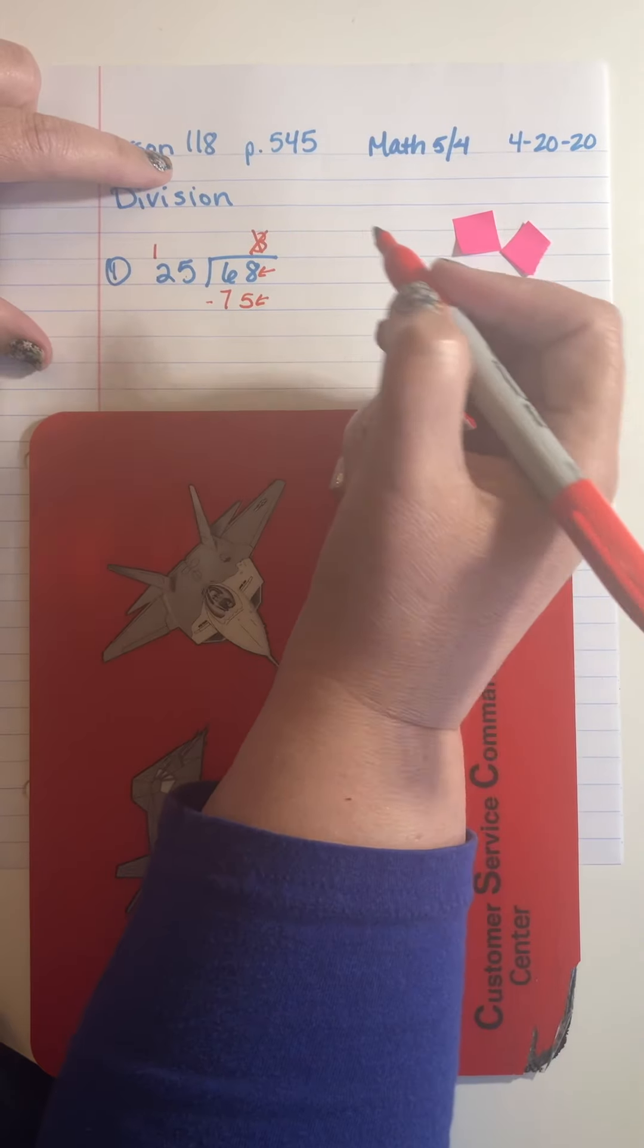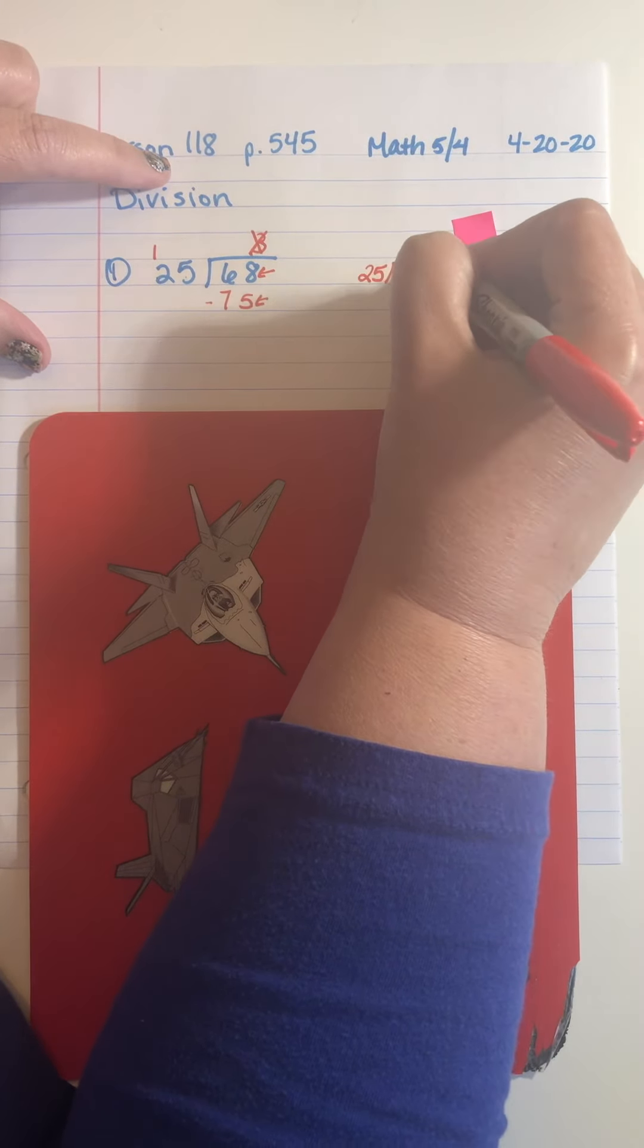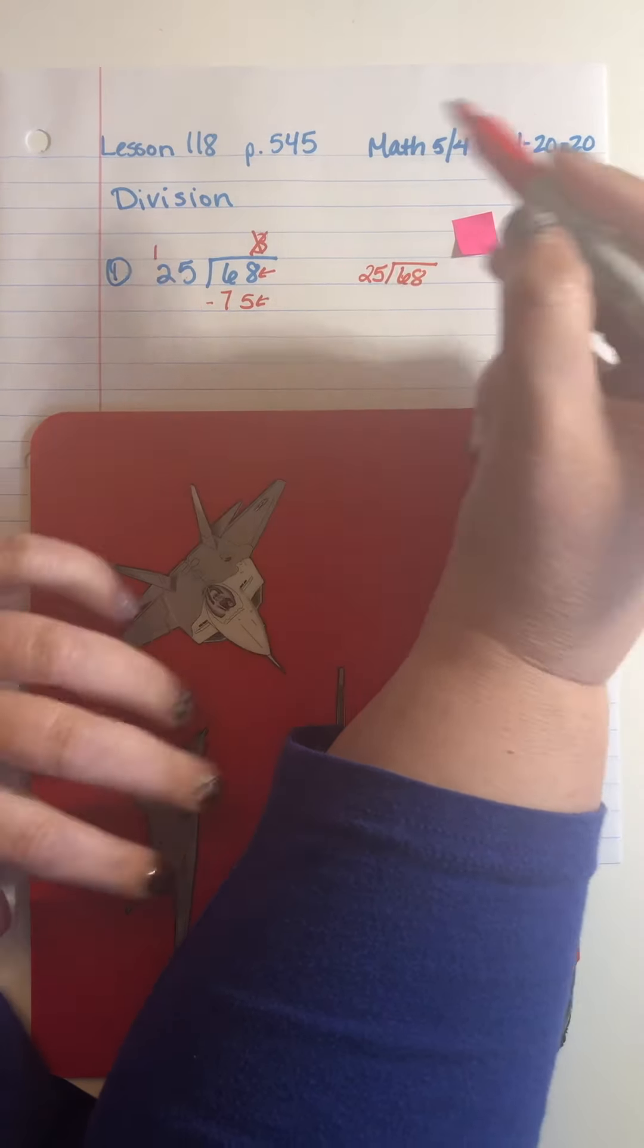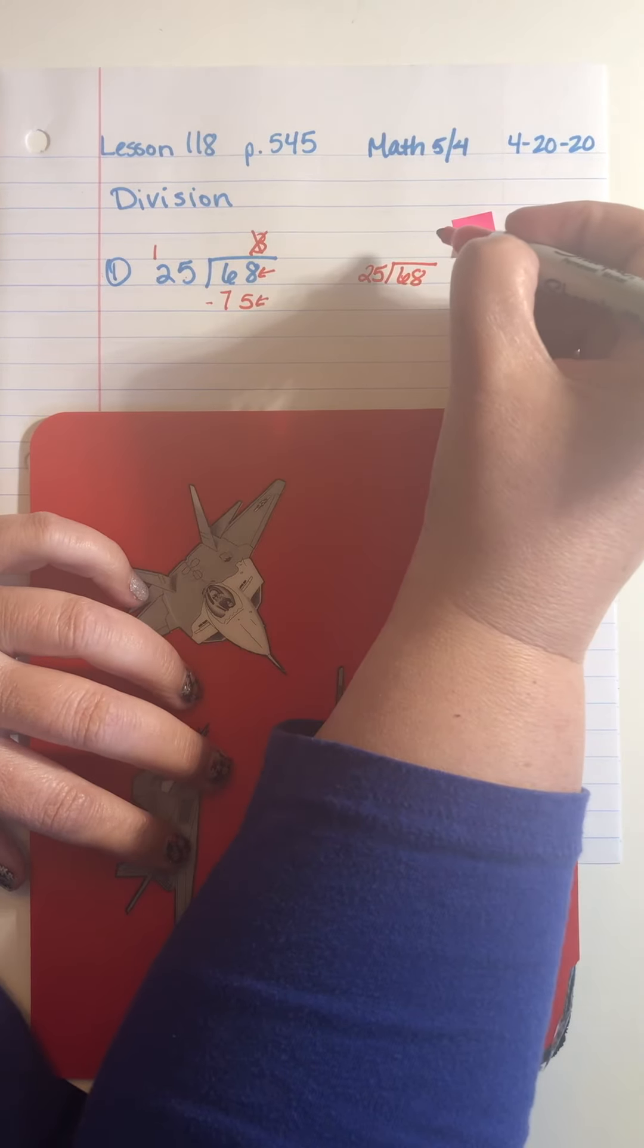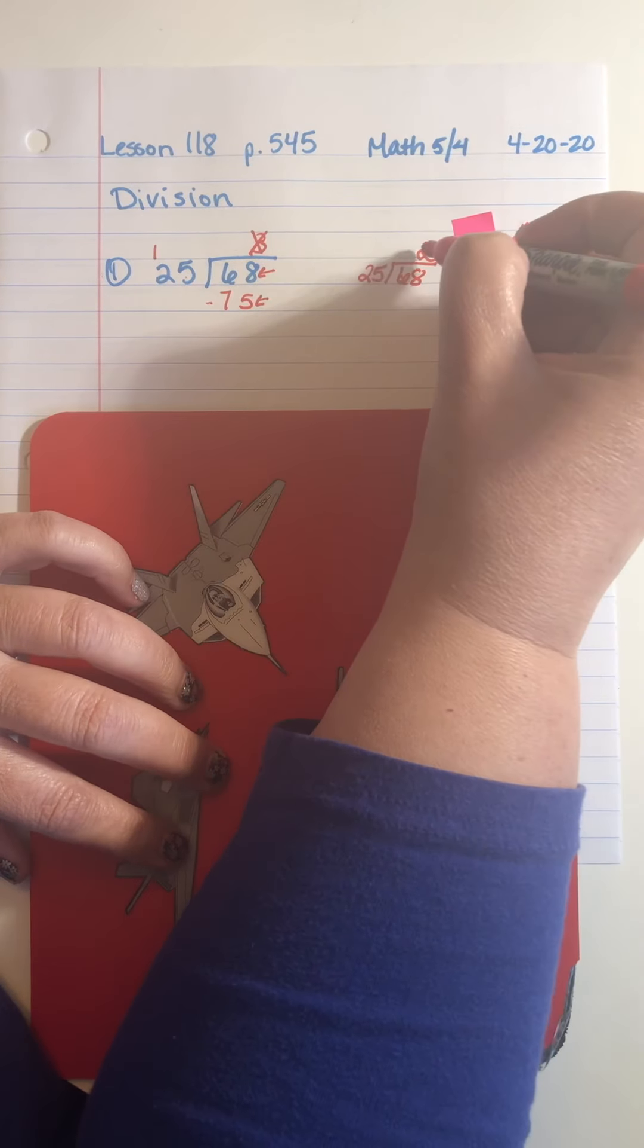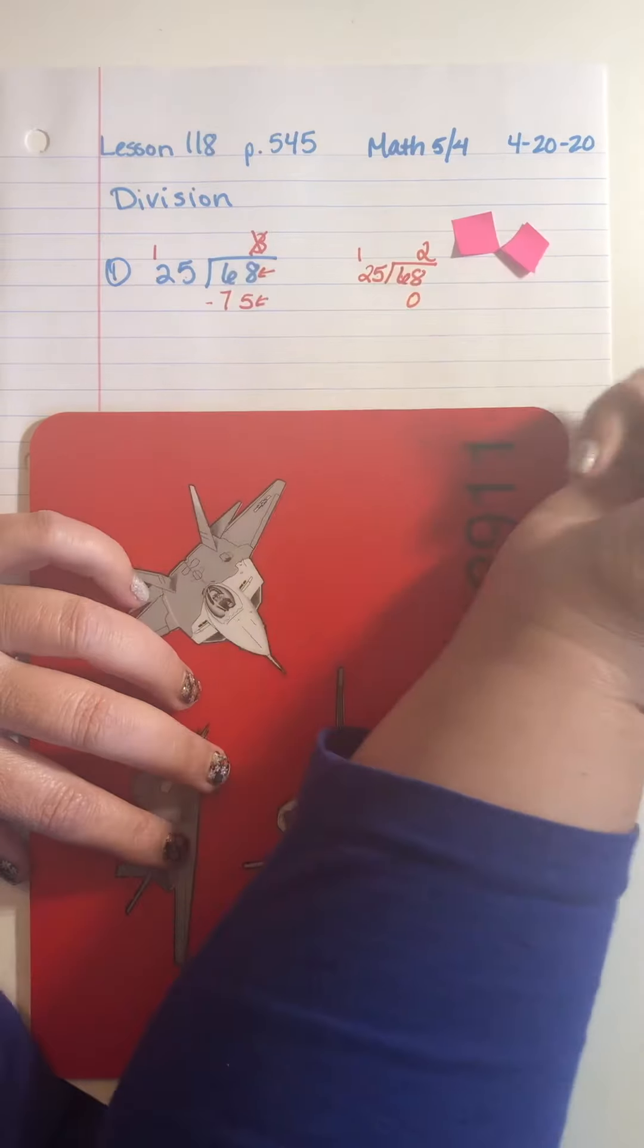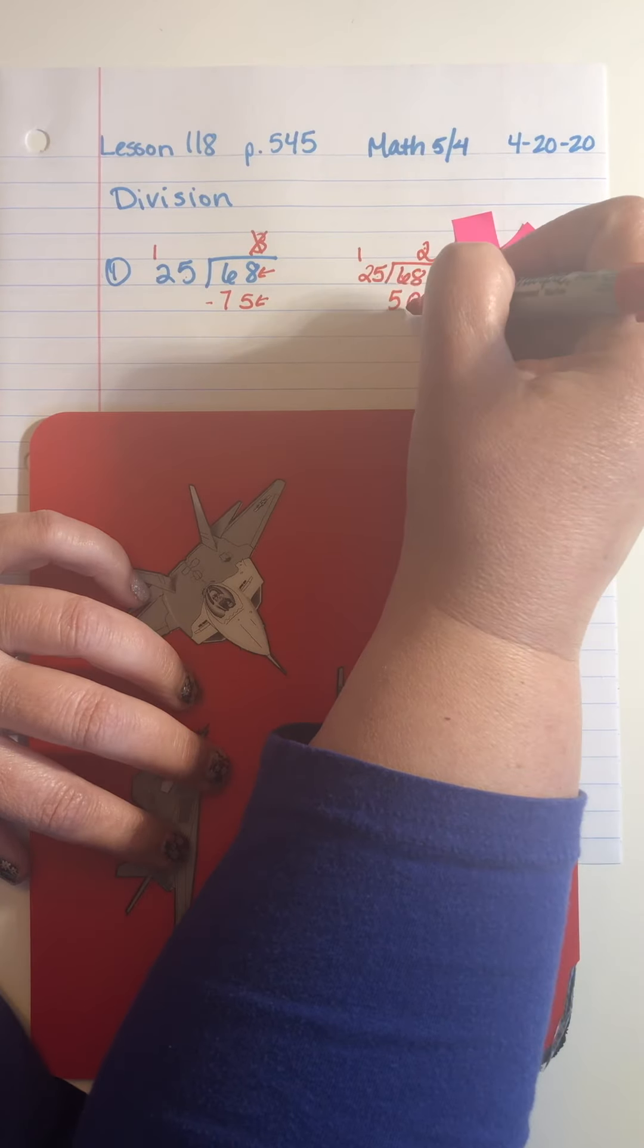So I'm going to rewrite my problem and go lower. 68 divided by 25 is my original problem. I know three was too high. So I'm going to go with two to go one lower. So two times five is ten. Write down your zero. Carry forward your one. Two times two is four plus one is five. Now I have 68 and 50. 68, I can subtract 50 and that'll work out.